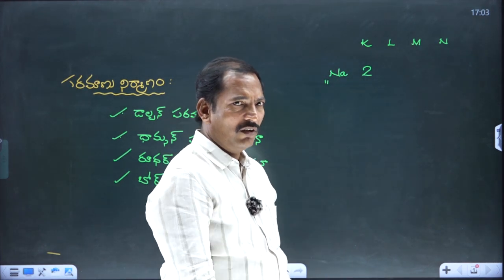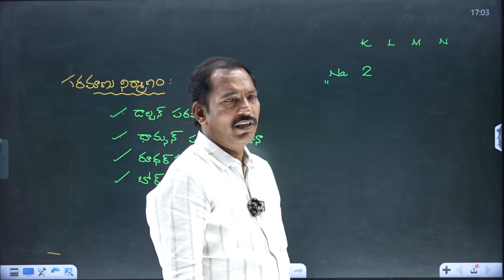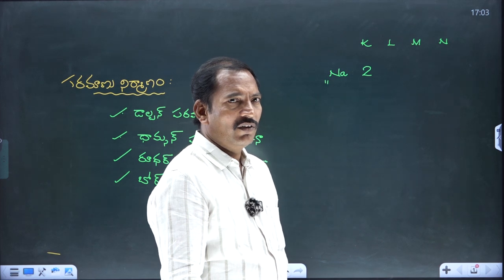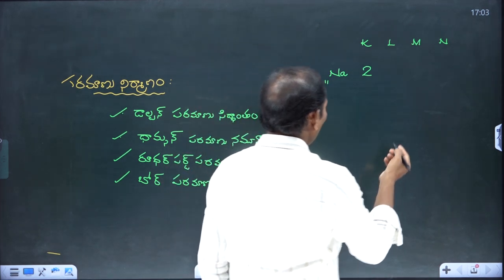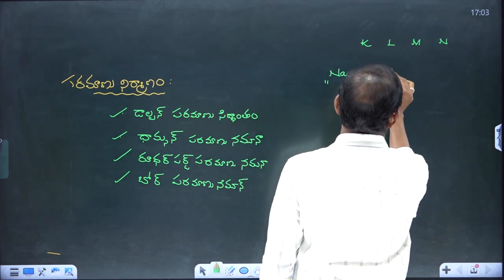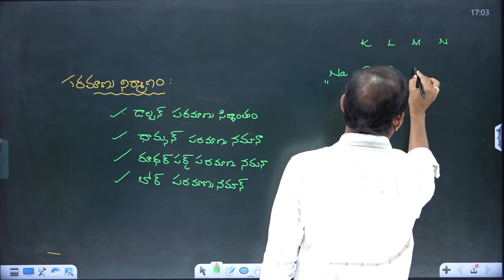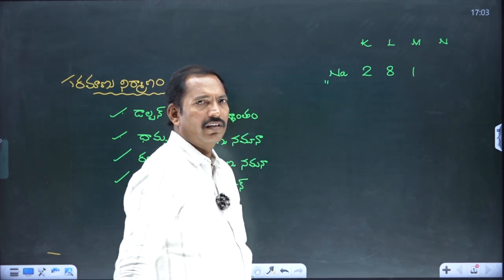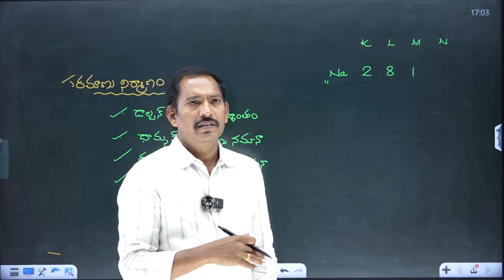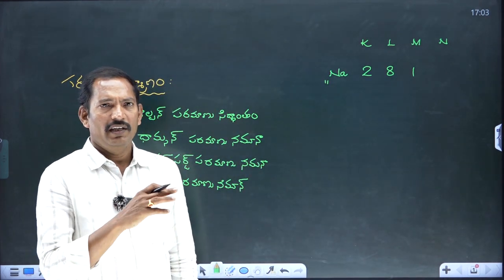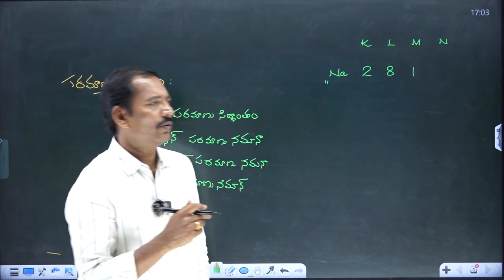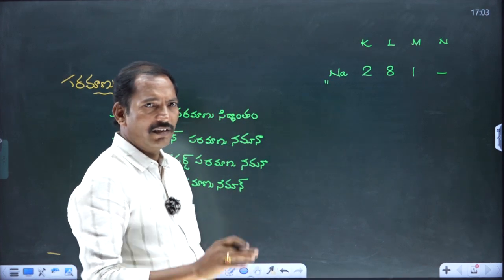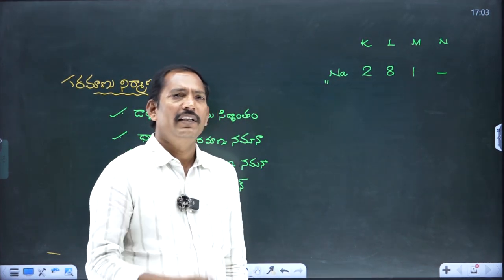In the first orbit, there are 2 electrons. In the second orbit, it is 8. In the third orbit, it is 1. So atomic number 11 (sodium) has configuration 2, 8, 1. Sodium's electron configuration is 2-8-1.